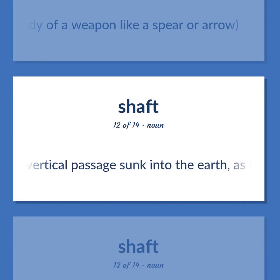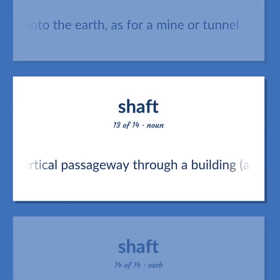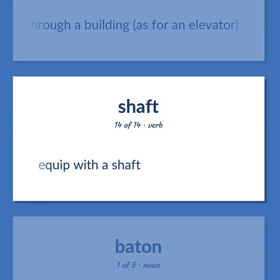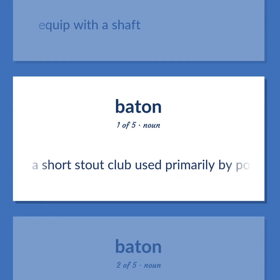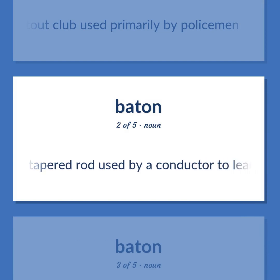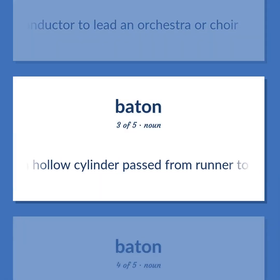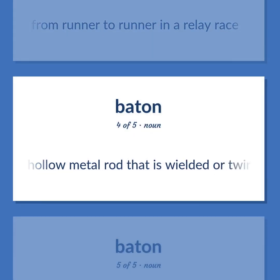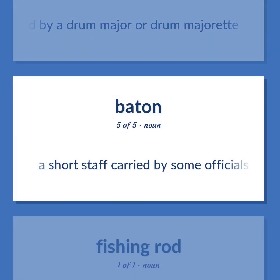A long vertical passage sunk into the earth, as for a mine or tunnel. A vertical passageway through a building, as for an elevator. Equip with a shaft. A short stout club used primarily by policemen. A thin tapered rod used by a conductor to lead an orchestra or choir. A hollow cylinder passed from runner to runner in a relay race. A hollow metal rod that is wielded or twirled by a drum major or drum majorette. A short staff carried by some officials to symbolize an office or authority.